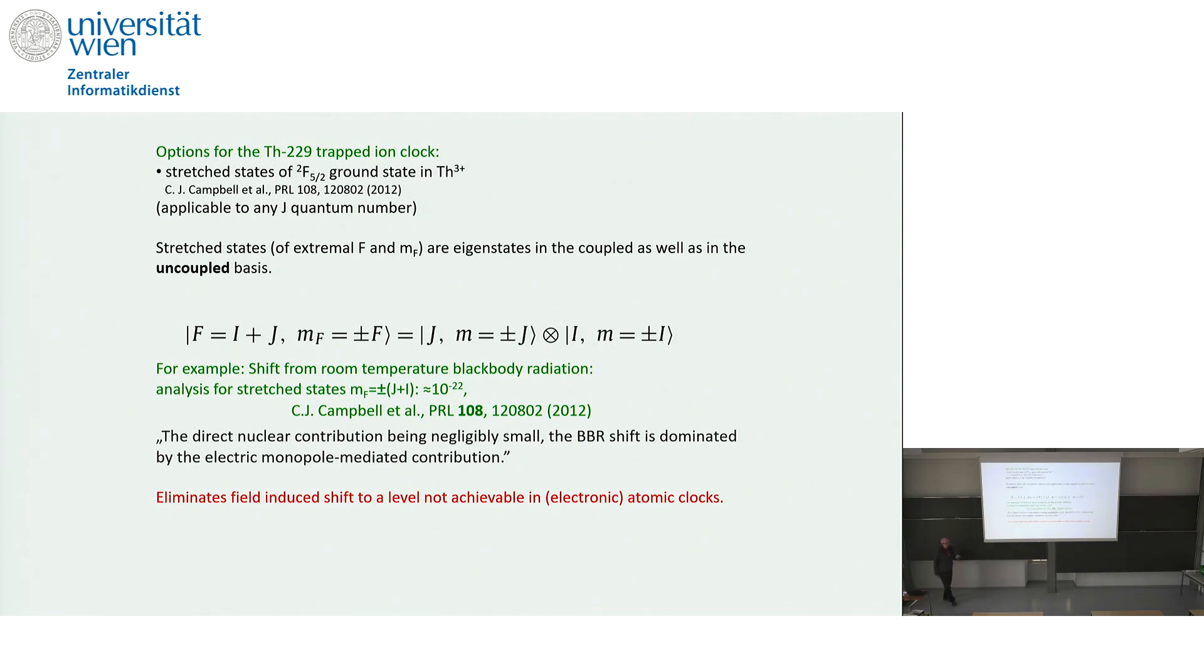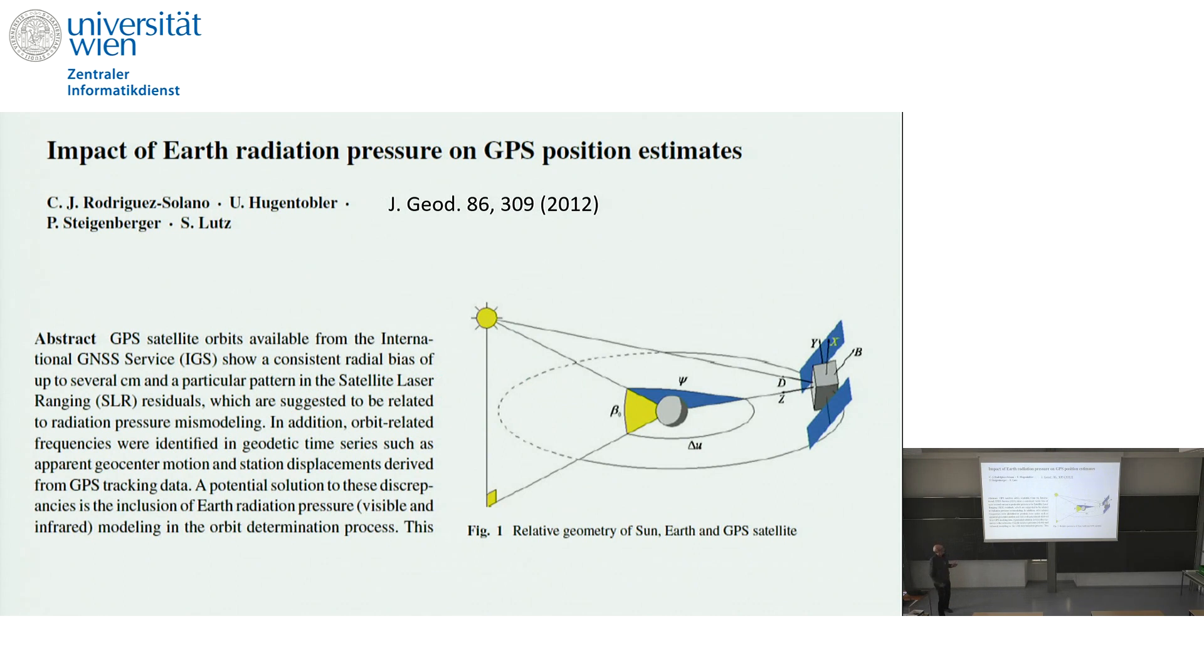For one final slide, I'd like to switch topics briefly for one minute. And it is related to blackbody radiation in terms of radiation pressure. Like what you heard from Helmut Rauch this morning about radiation effects. I spoke about clocks. Clocks is of course also related to time transfer. Time transfer, precise time transfer is via satellites. And it is so precise or so sensitive that the effect of radiation pressure on the GPS satellites is relevant for geodesy and for time transfer.